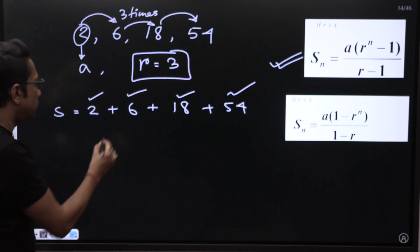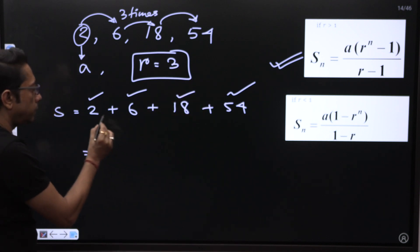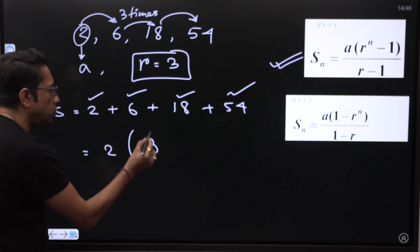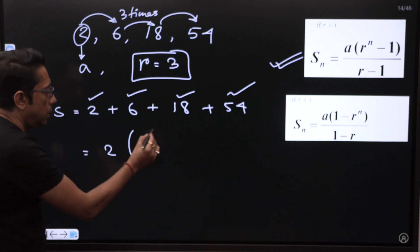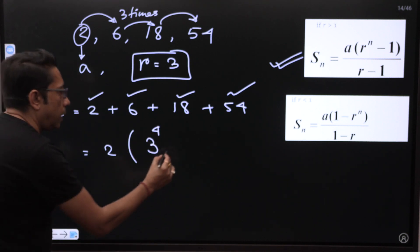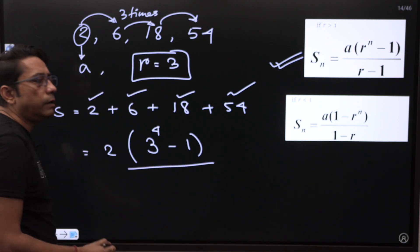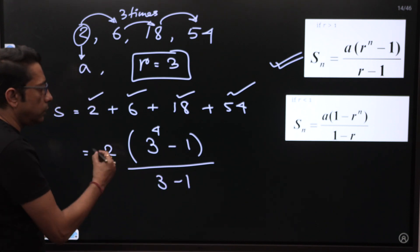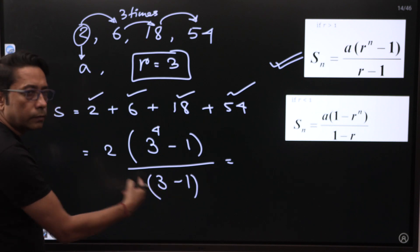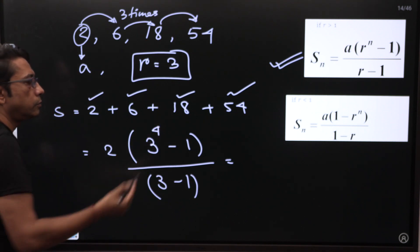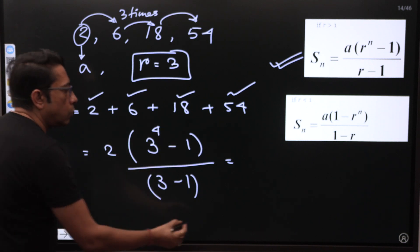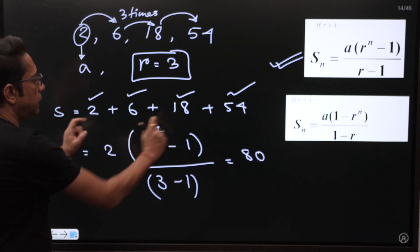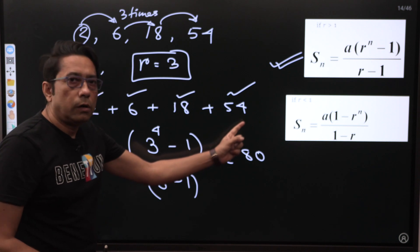Applying the formula: S equals 2 into 3 to the power 4 minus 1, divided by 3 minus 1. The 2's cancel. 3 to the power 4 is 81. Minus 1 gives 80. Let's verify: 2 plus 6 is 8, plus 18 is 26, plus 54 is 80. Yes, 80 is correct!